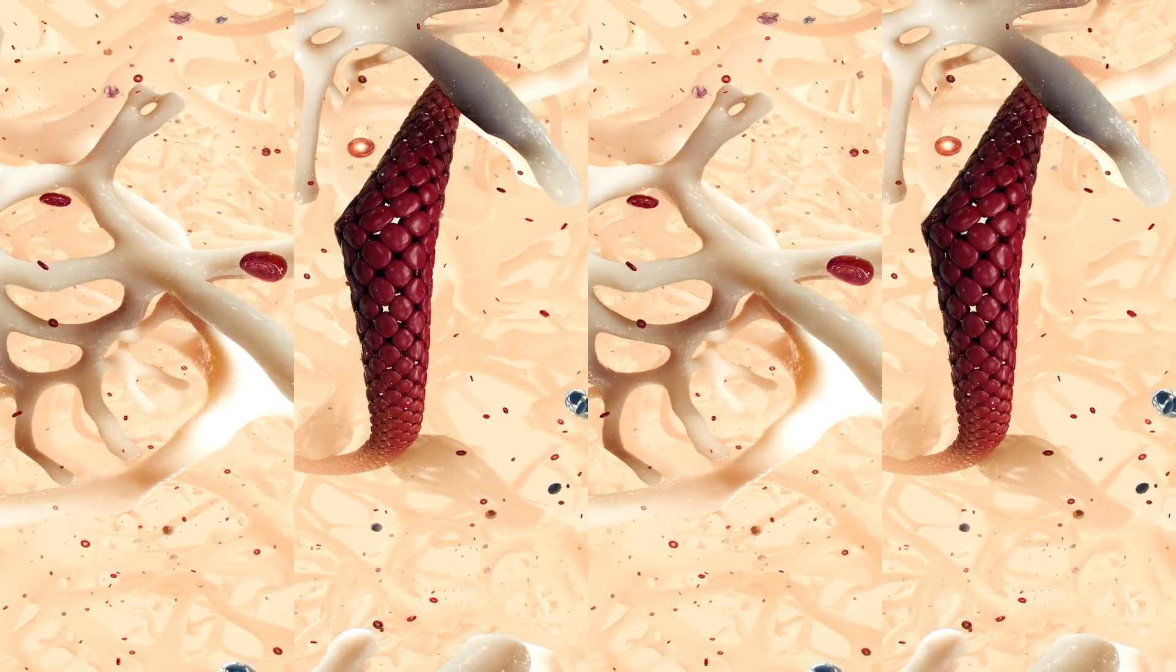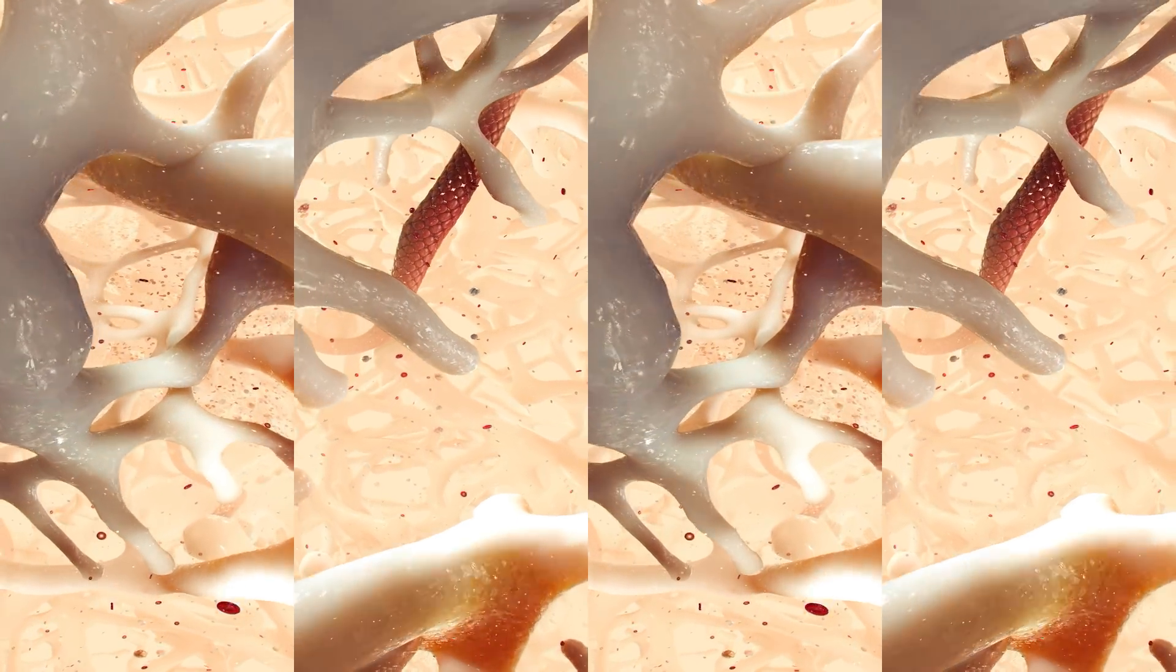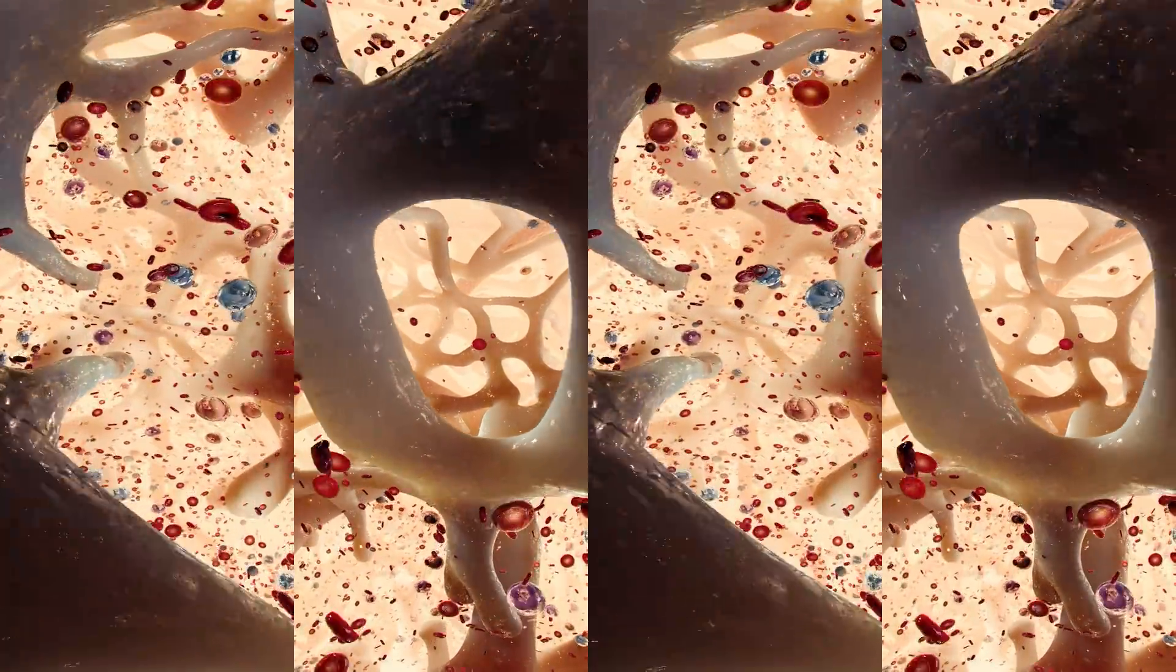This means that the body is continually producing such cells in a process called hematopoiesis to provide a constant supply. Typically, the body produces around 200 billion red blood cells every day.